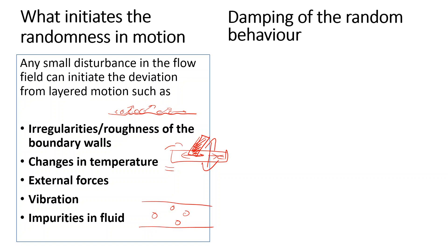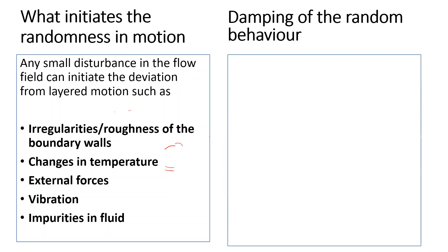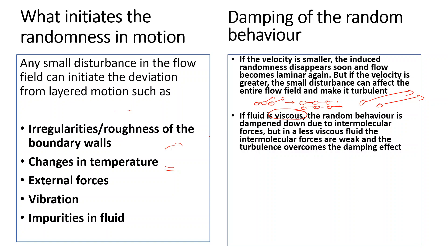Sometimes those disturbances, once started, can die down or damp out. If the velocity is small and the flow is moving very slowly, when any disturbance appears, the intermolecular forces will bring it back to order and layered flow will be restored. But if the velocity is very high, a small disturbance can disturb the whole flow and viscosity will not be able to tie everything together.